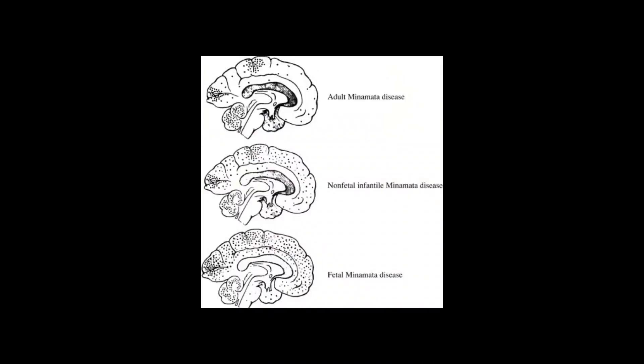A congenital form of the disease can also affect fetuses in the womb. As of March 2001, 2,265 victims have been officially recognized as having Minamata Disease, of whom 1,784 had died because of the disease.